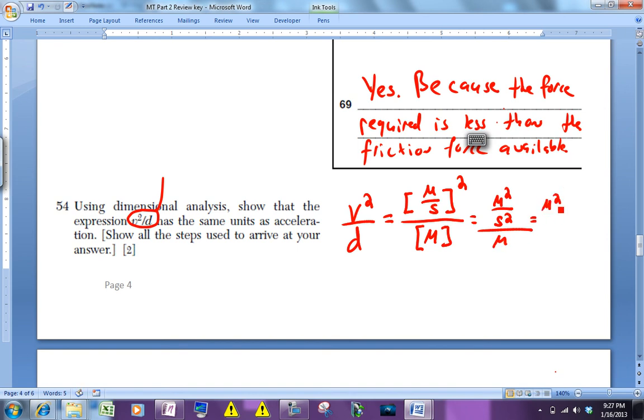which is the same as meters squared over seconds squared times 1 over m. Notice this crosses off with this, and you are indeed left with meters per second squared. And everybody is happy. At least I am happy.